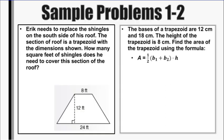So let's take a look here. Erik needs to replace the shingles on the south side of his roof. The section of his roof is a trapezoid with the dimensions shown. How many square feet of shingles does he need to cover the section of the roof? So we need to find the area.